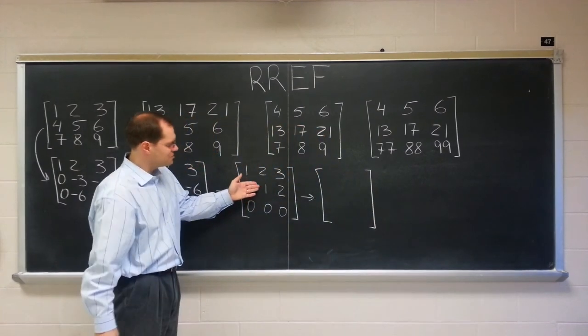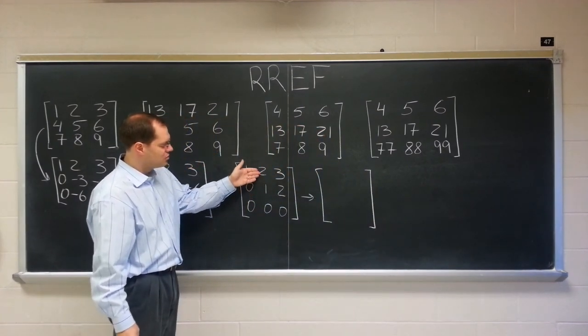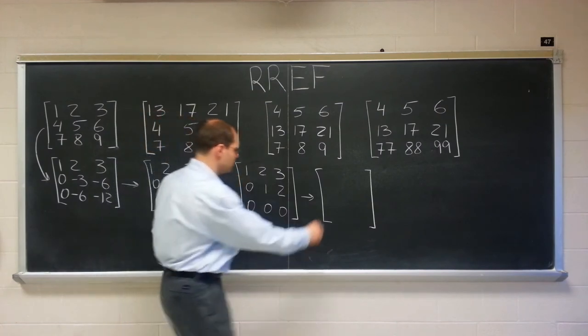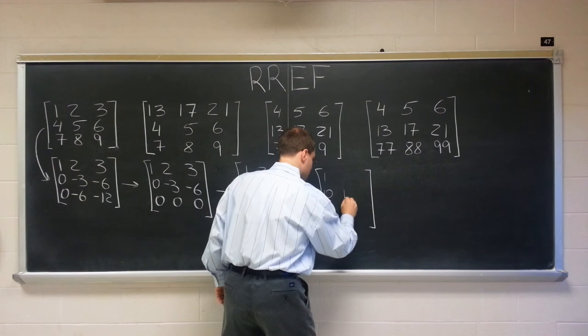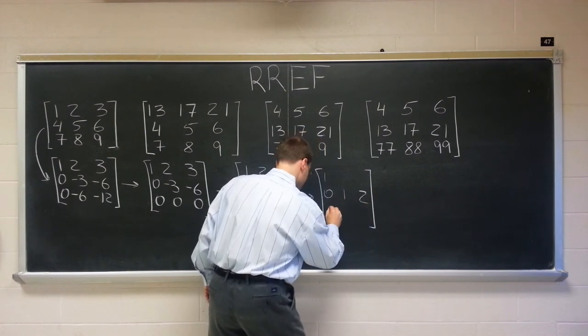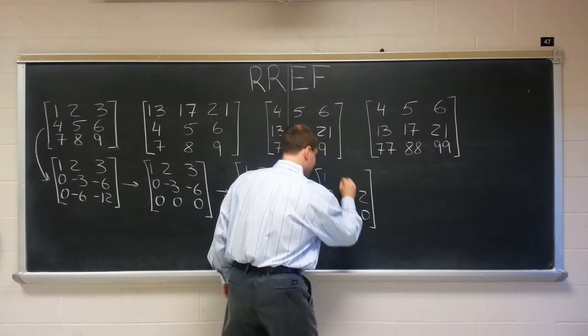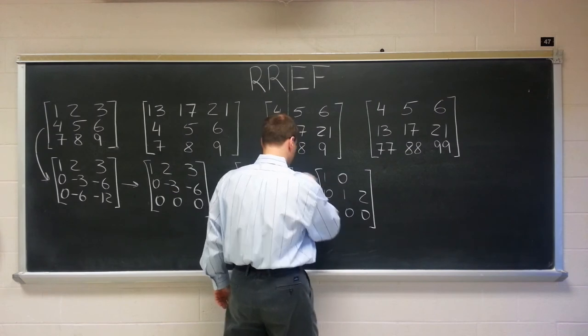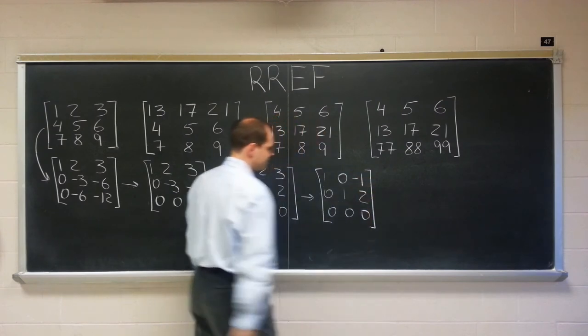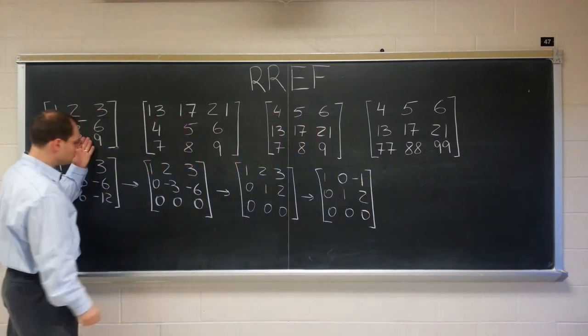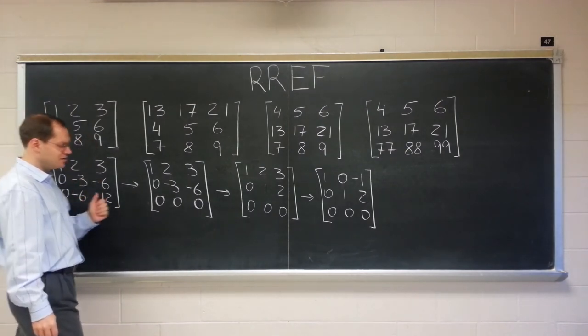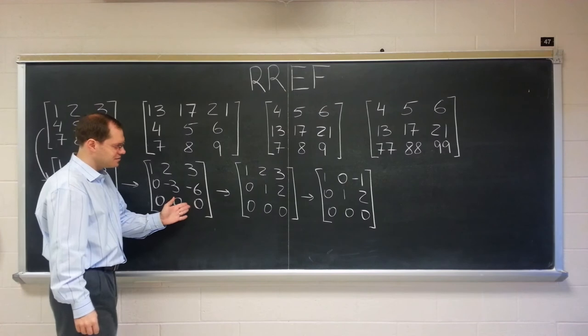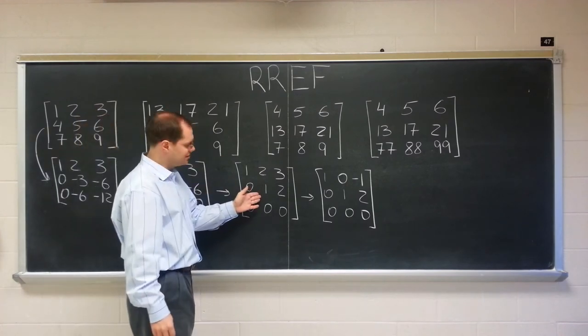And by the time you subtract twice the second row from the first row, leaving the matrix in row reduced echelon form, one, zero, minus one. If you couldn't see it at all here, it became possible to see it here. A little bit more obvious here. Nearly obvious here.